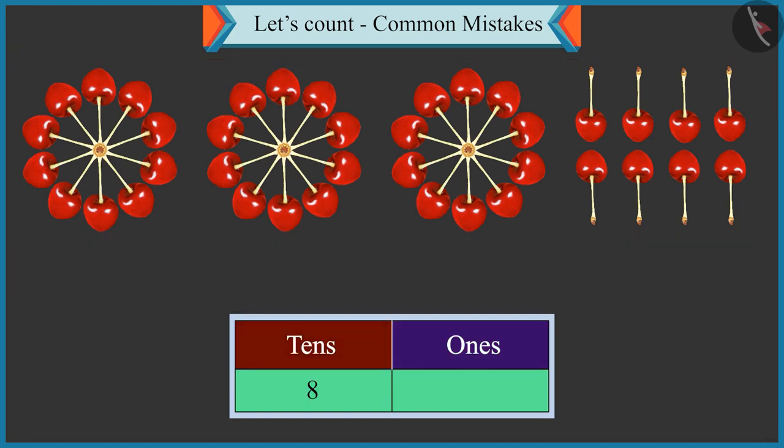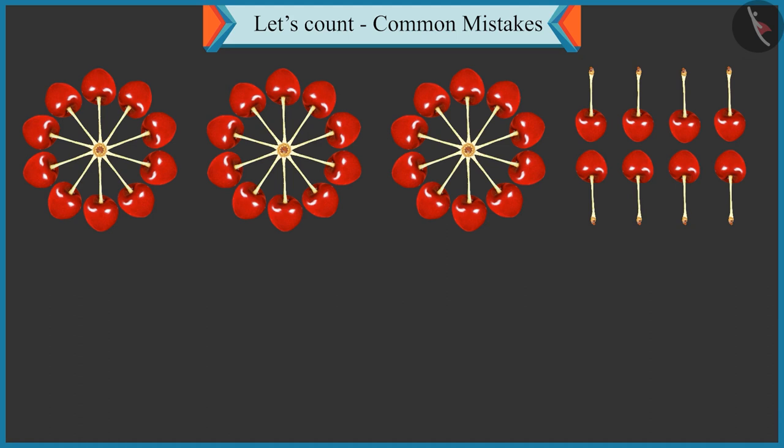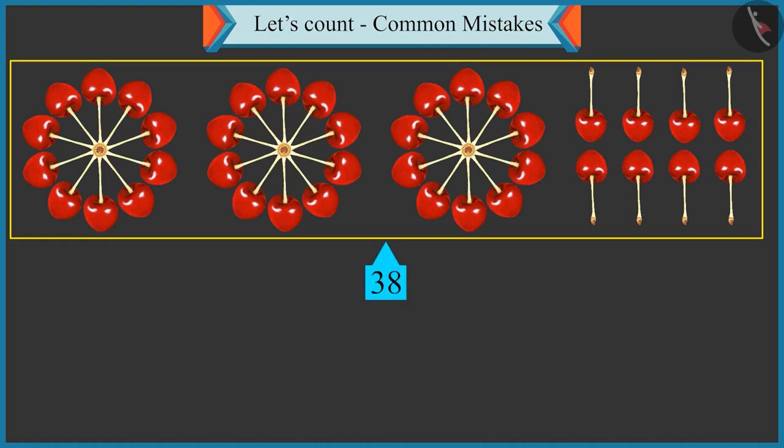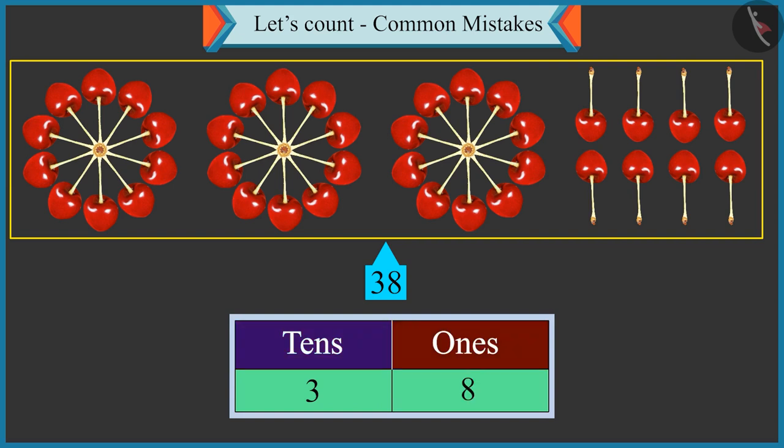8 in the box of tens and 3 in the box of ones. Oh, Chotu, there are 38 cherries in total. 38 means 3 tens and 8 ones.